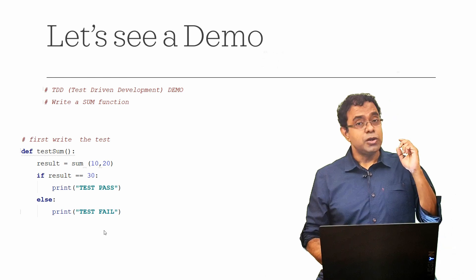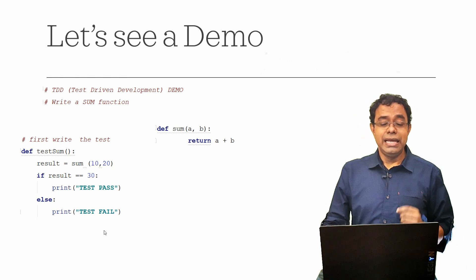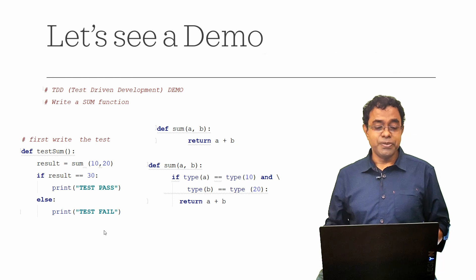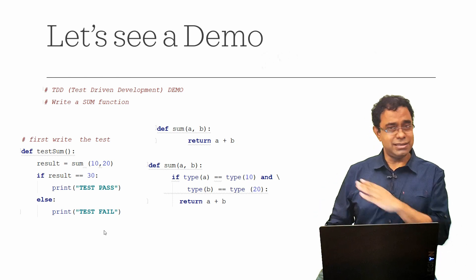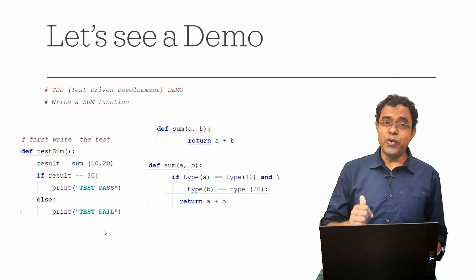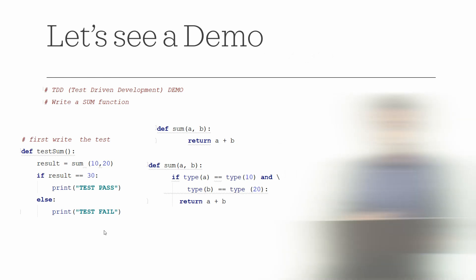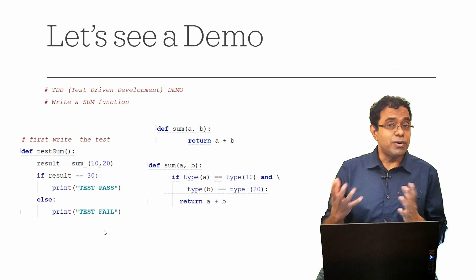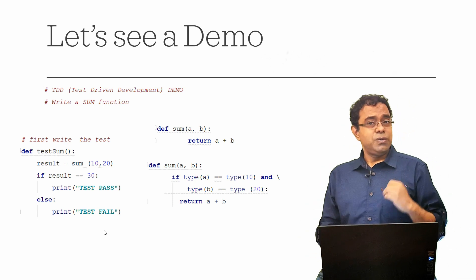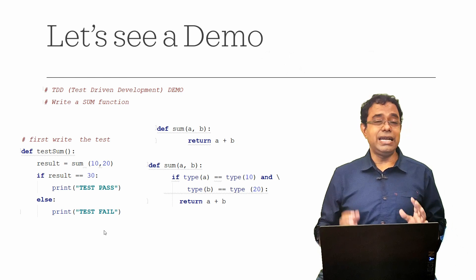If I run this test, it will fail because there is no sum function yet. So I go to step two and define a sum function that returns a plus b. Step three is refactoring — for example, checking that both a and b are integers. This is a crude example just for explanation. So step one: write the test; step two: write the production sum function; step three: refactor by verifying types.